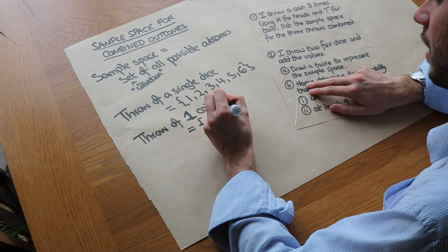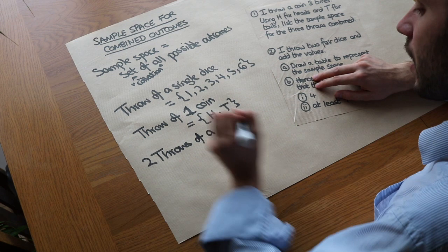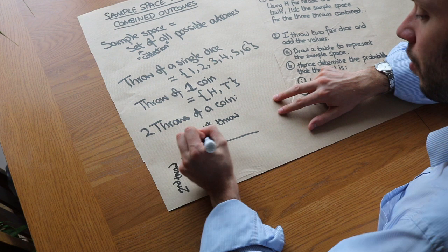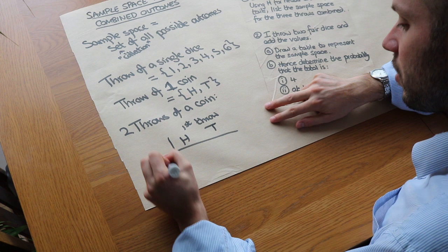But what if we had somehow the combined outcome from say two throws? Now we could do that as a sort of table, so we could have the first throw here, what we got in the first throw, and what we got on the second throw here. So in the first throw we might have got heads or tails, and the second throw we might have got heads or tails, and we're interested in the kind of combined outcome from both throws.